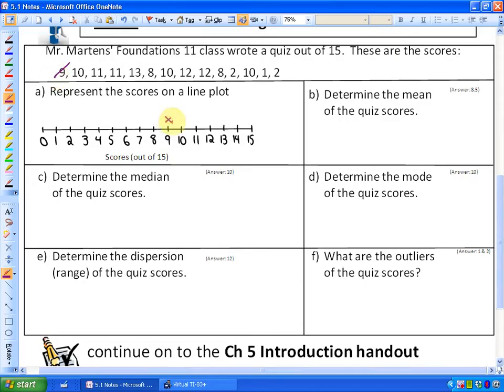I'm going to cross them as I go. There's a 9, a 10—and for every student, you need an X. If there's two 11s, you put an X to represent both scores. There's a 13, an 8, a 10, two 12s, another 8, a 2, another 10, a 1, and a 2. There's the line plot. Most of them got between 8 and 13, and a few students who didn't do very well are down at the bottom.